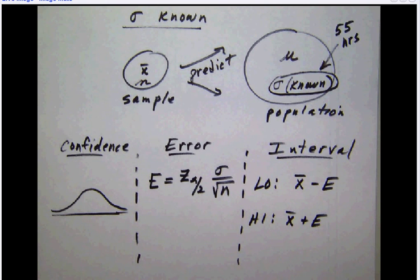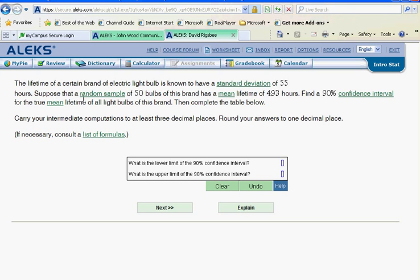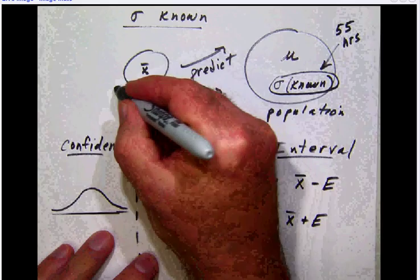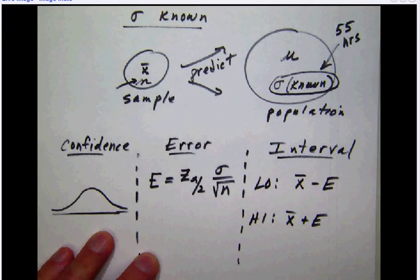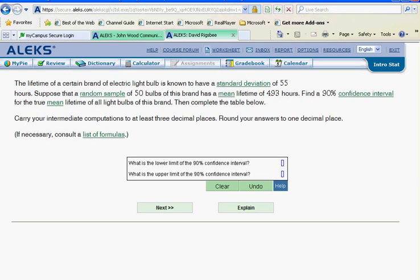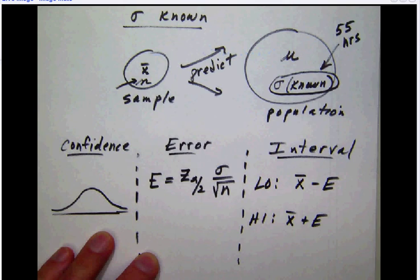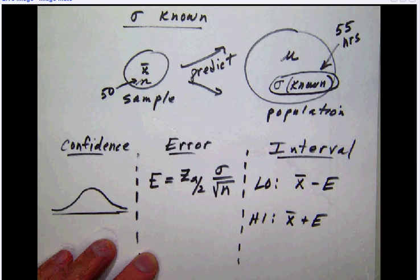Suppose a random sample of 50 bulbs. That's our sample size. So we can make a note over here that N, our sample size, in this case is going to be 50.